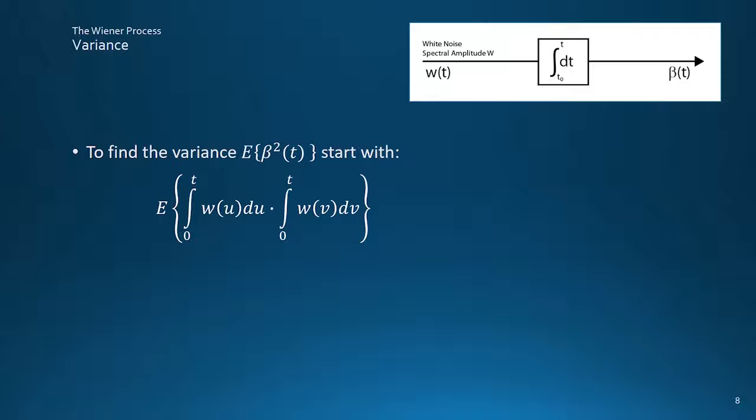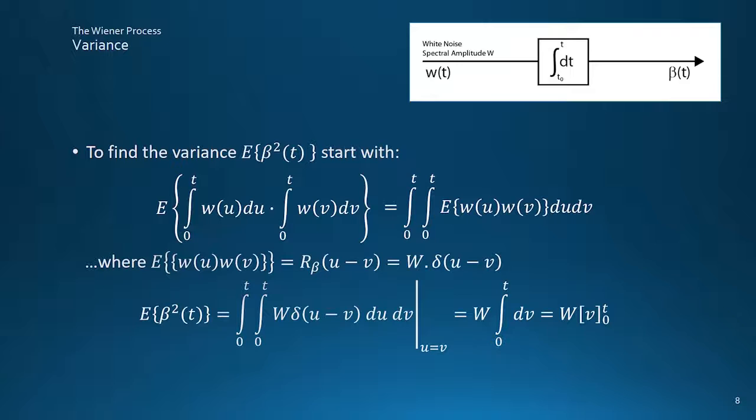To find the variance, we can start with the expectation of the multiplication of two samples of the integration of white noise w at times u and v. Taking the expectation inside the integral onto the white noise gives its autocorrelation, which is the Dirac function. Now the variance is the autocorrelation for zero lag, that is for u equal to v, when the Dirac function integrates to unity. So the variance of the integral of white noise and the Wiener process increases in proportion to the elapsed time t.